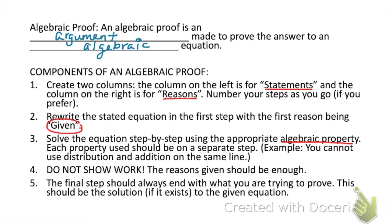The very first statement is always going to be the equation that we're given — so our first statement is that equation and our first reason is always 'given.' This is going to be true for geometric proofs as well. From there, we want to solve the equation step by step using the appropriate algebraic property. Each property should be used on a separate step — for example, we can't use distribution and addition on the same line.